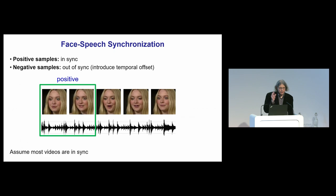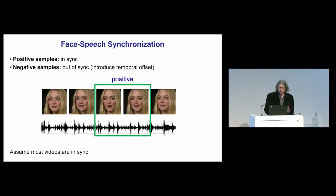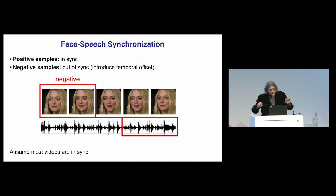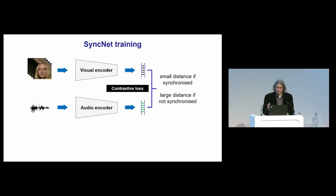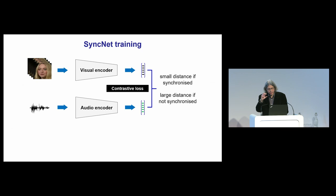Where do we get the data from? We get it from natural signals. We take some frames and the corresponding audio — that will be synchronised, a positive sample. We can get any number of positive samples from videos of talking heads. If we take the frames and apply a temporal displacement, the audio and visual will no longer be synchronised — that's a negative sample. We can generate these positive and negative samples effortlessly from any talking head video, and we can get millions of these. That's our training data.